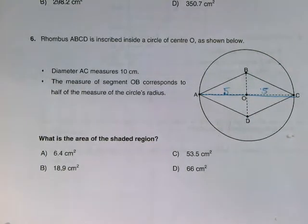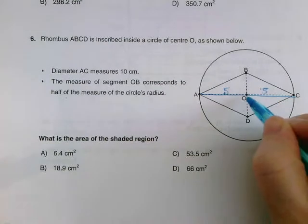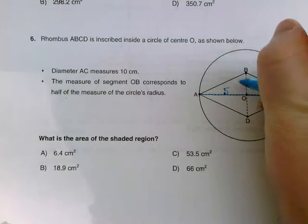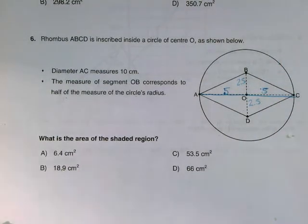Okay, the measure of segment OB corresponds to half of the measure of the circle's radius. So the radius we just figured out is 5. That means these measures are 2.5 and 2.5, if we need them.